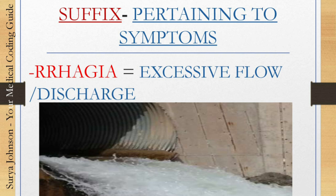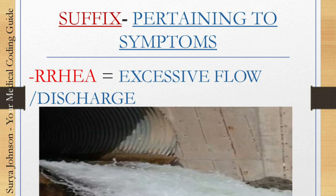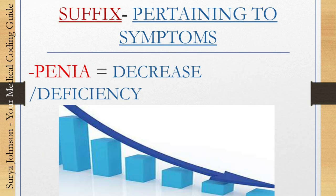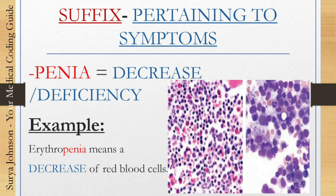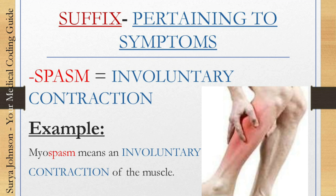The next one, '-rrhagia,' means excessive flow or discharge. For example, hemorrhage means discharge of blood. The next one, '-rrhea,' also means excessive flow or discharge. For example, rhinorrhea is the medical term for excessive flow or discharge from the nose. The next one, '-penia,' means decrease or deficiency. For example, erythropenia means a decrease of red blood cells in the body. The next one, '-spasm,' means involuntary contraction. For example, myospasm means an involuntary contraction of the muscle.